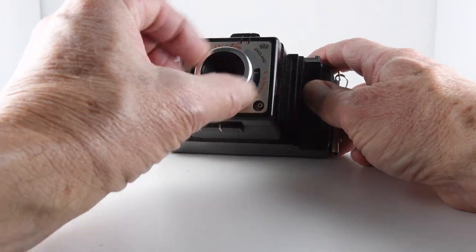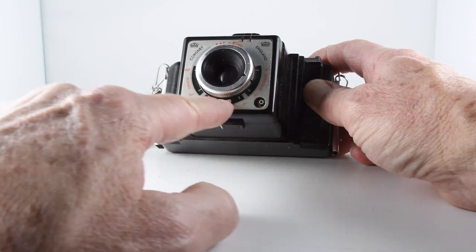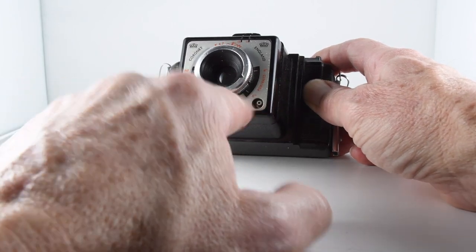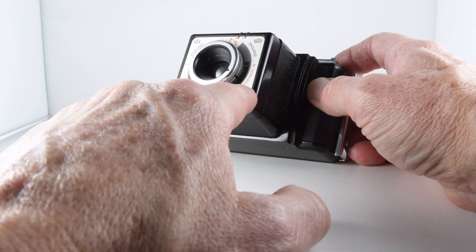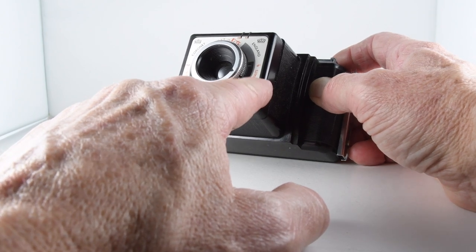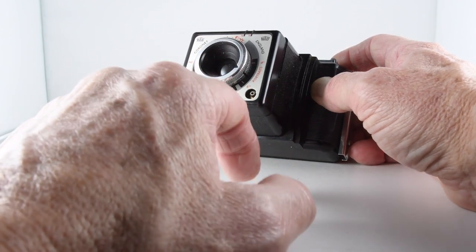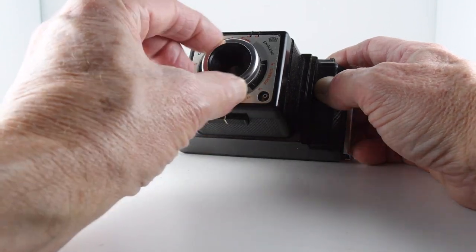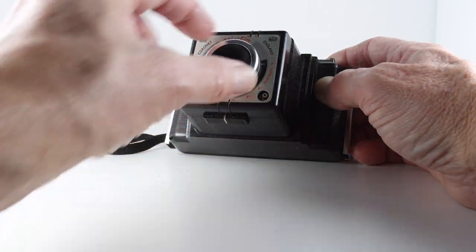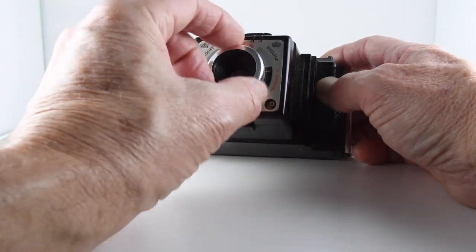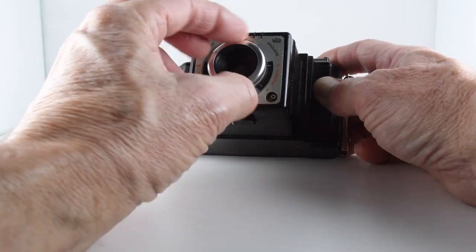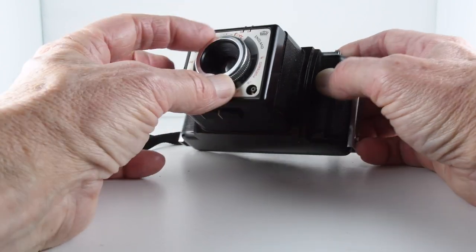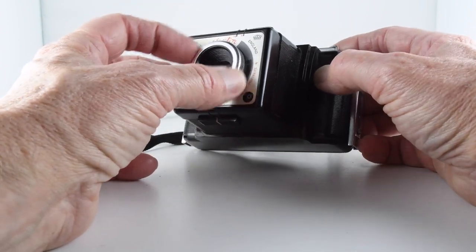We have our focus ring and there's a scale around the side here which gives us an idea of the actual distance but also a guide for like portraits it says, groups, scenes, so you can move that accordingly. I believe the lens is a meniscus lens so there's not going to be a huge amount of control but it does seem to move.